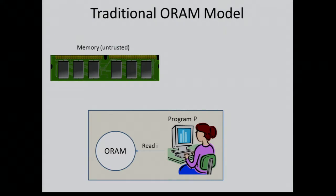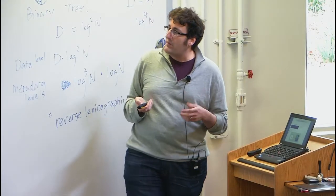ORAM is a compiler that takes the program and modifies it a little bit. It's going to run the original program. Whenever the program wants to read some location in memory, this compiler will translate it into a bunch of other read and write instructions that it's going to actually execute. It does this in such a way that even if you see the access pattern — these instructions — you're not really learning anything. You're hiding the actual physical access pattern. That's the basic ORAM setting. You can also do writes, and you just execute the program with this ORAM compiler that provides security.